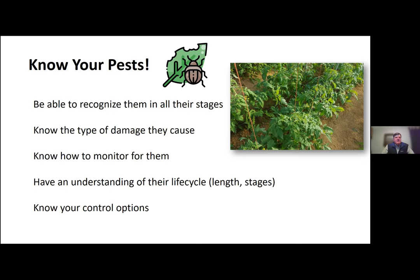Each pest may have a different strategy we use to monitor for it, and you need to know how to monitor for them. If you start to see some, you can begin to take counts throughout your high tunnel to see what the numbers are like from week to week — are the numbers going up, are they going down? That's all really critical information. You also need to understand their life cycle: how long is it? Is it five days or five weeks? What are the different stages, and where do they occur?